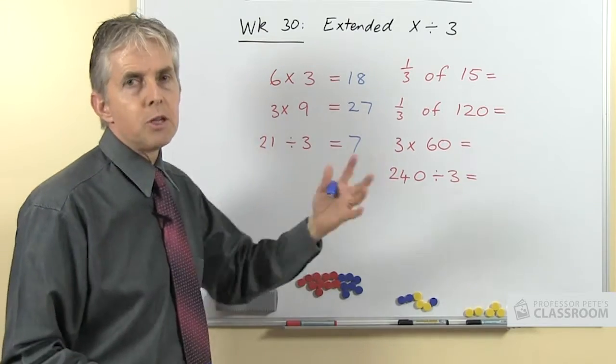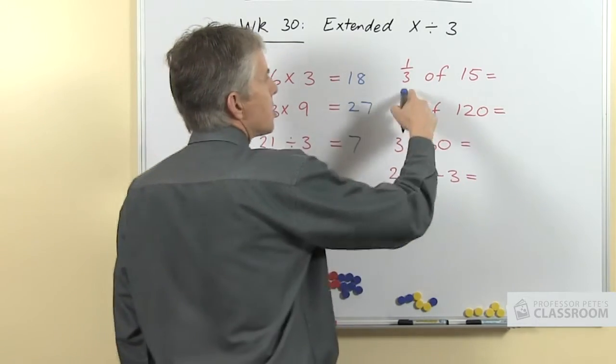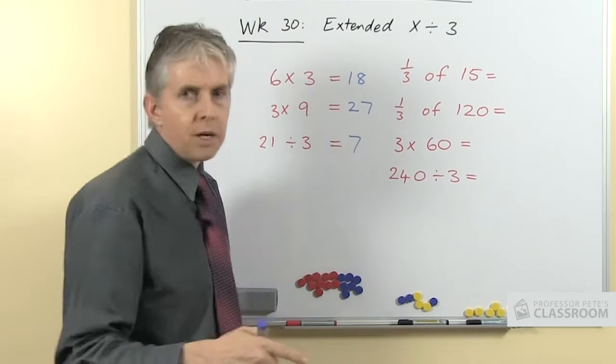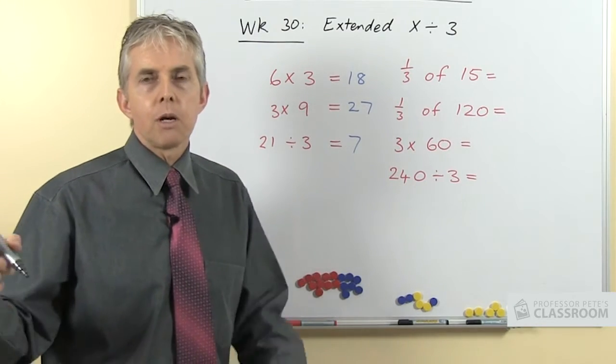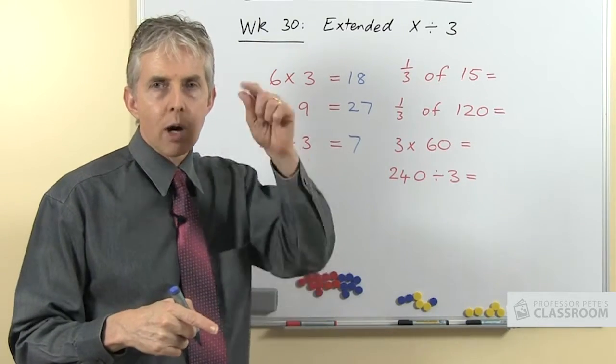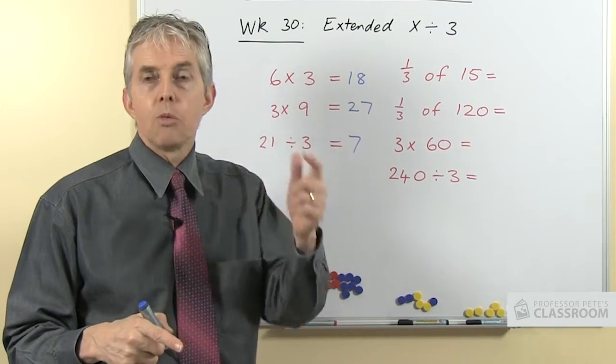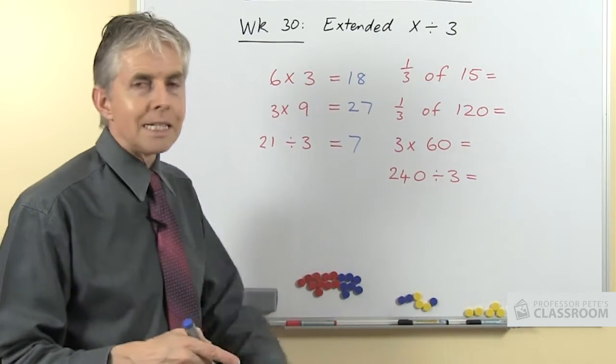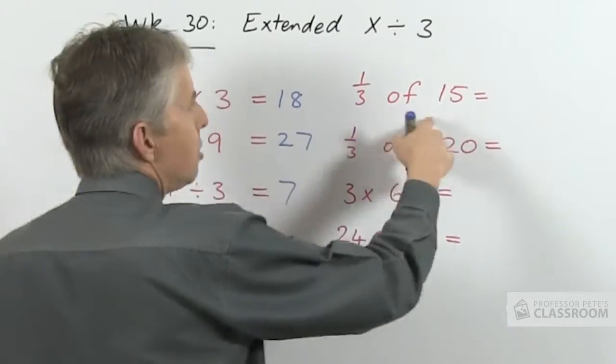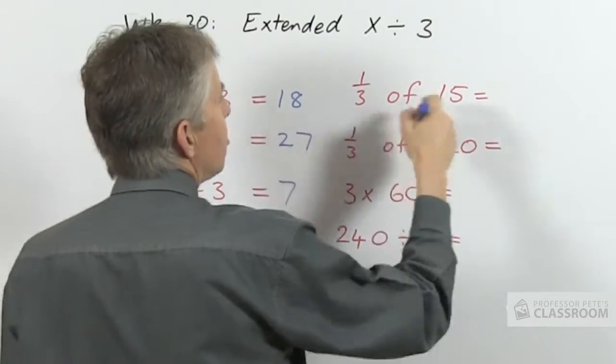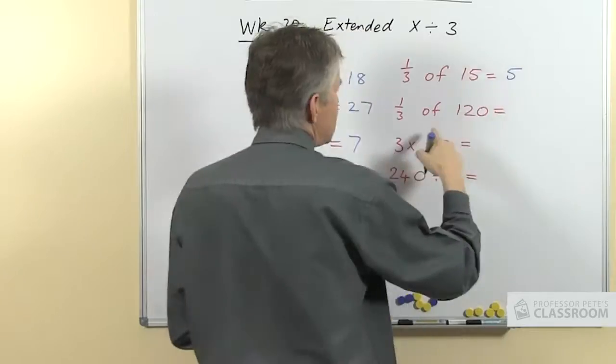Then we have some 1/3 of questions. Students will have learned by this point that if you multiply by a unit fraction—a fraction with a 1 in the numerator position—it's the same as dividing by the denominator. So 1/3 of 15 is 15 divided by 3. That one's easy.